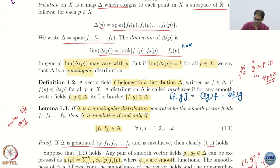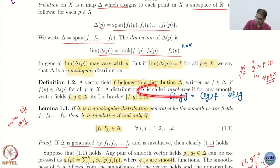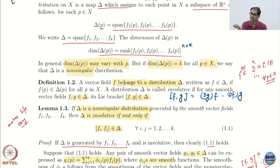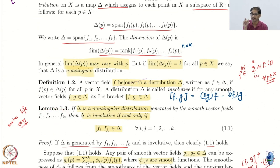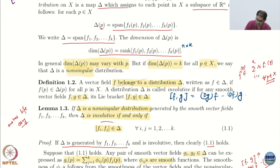You might say it seems like I have asked for everything, but actually I have not. If I just go by the definition — any two vector fields belong to the distribution means their Lie bracket must belong — that is involutivity. If I have F1 to Fk, can you imagine how many combinations I have to check? Many many. It is not enough to just check the generators — I also need to check F1, bracket-of-F1-F2, and further successive Lie brackets.